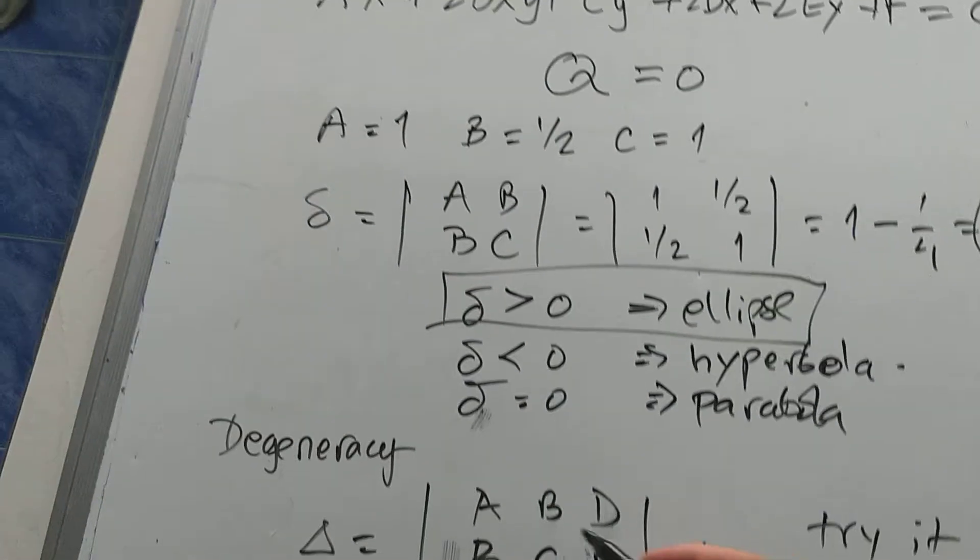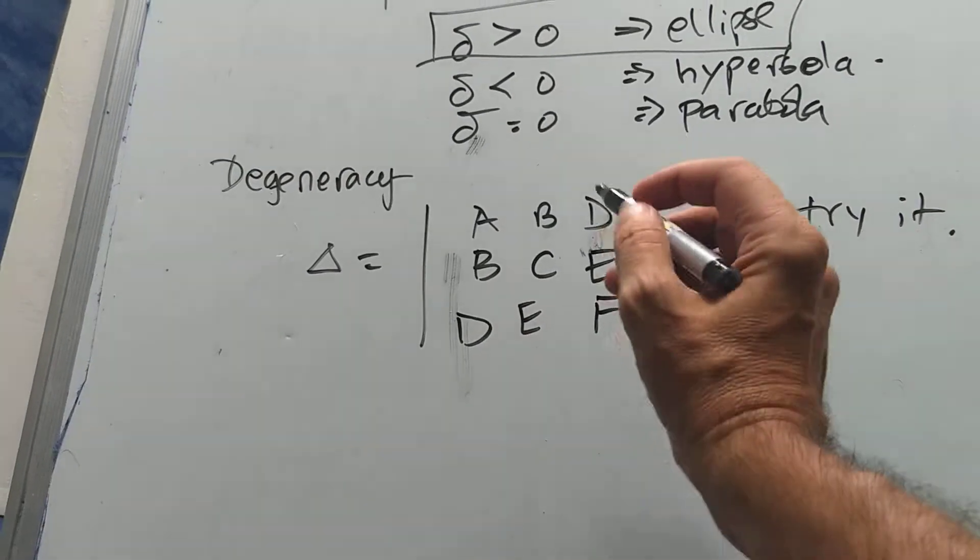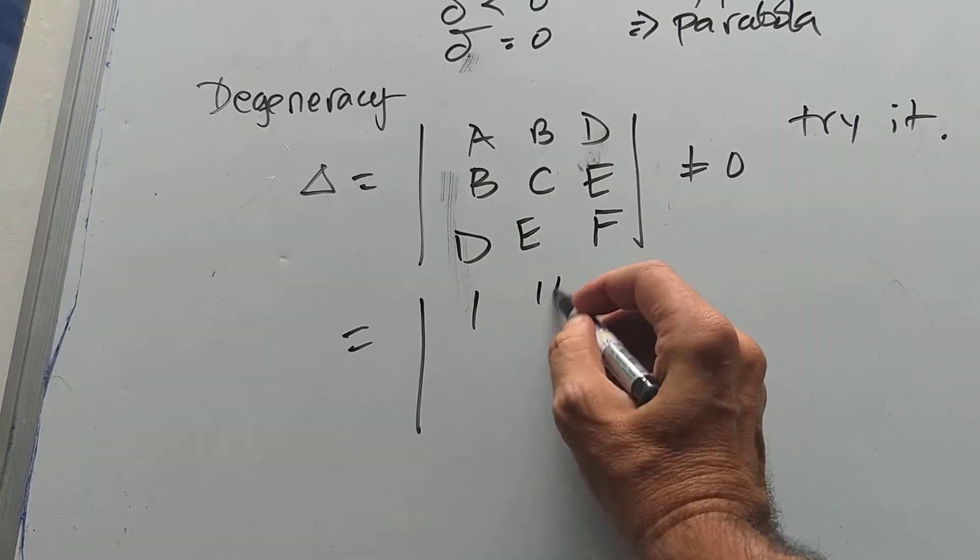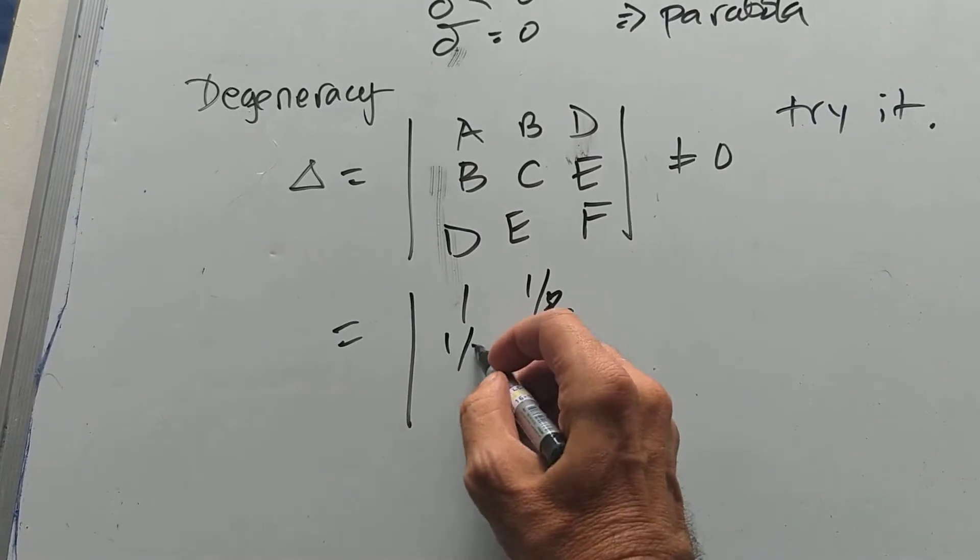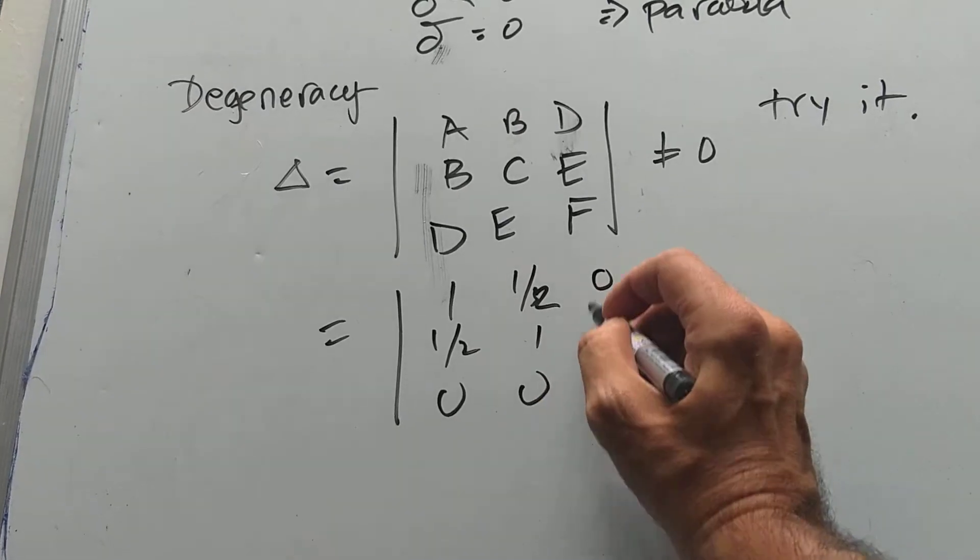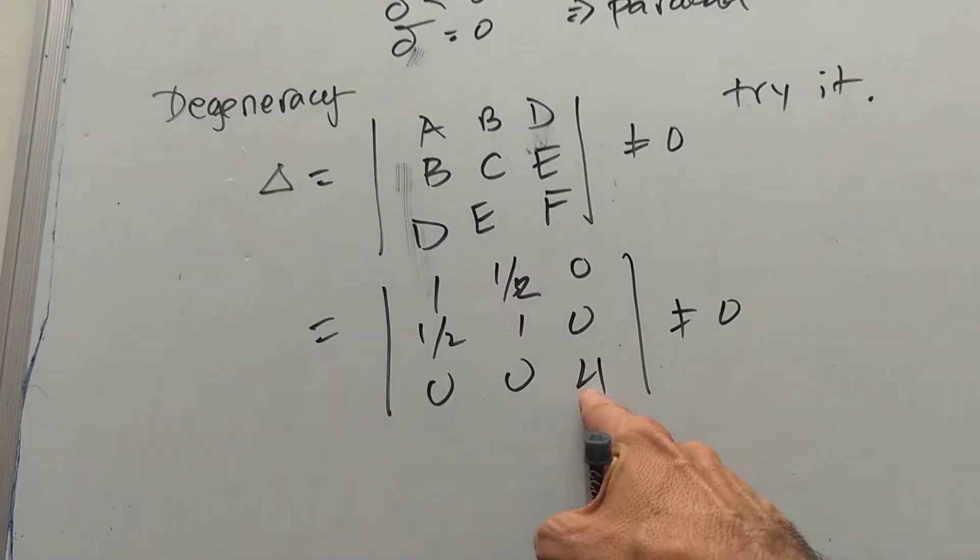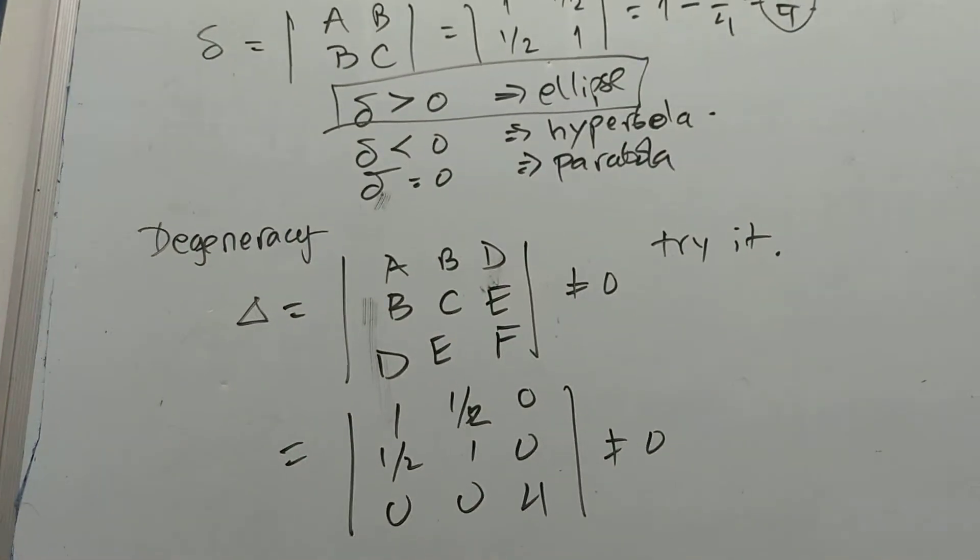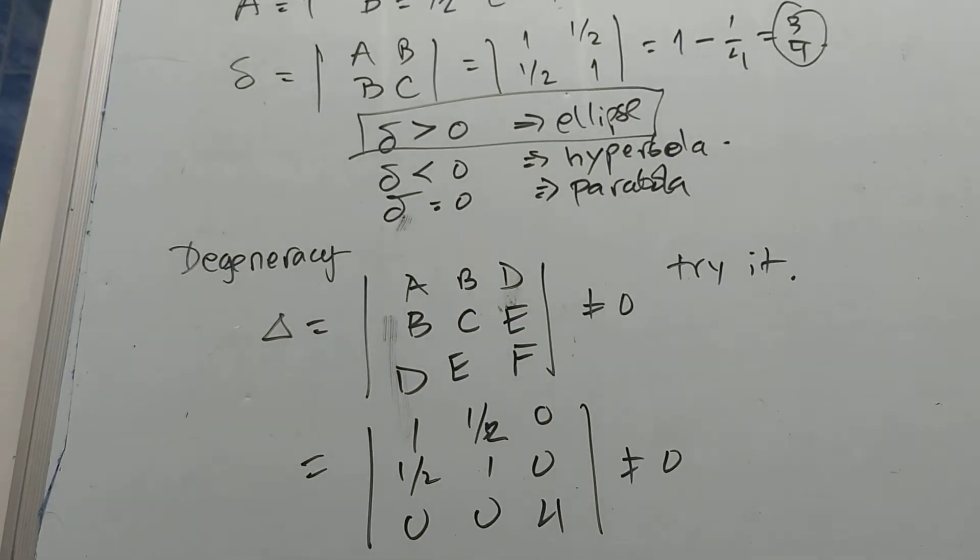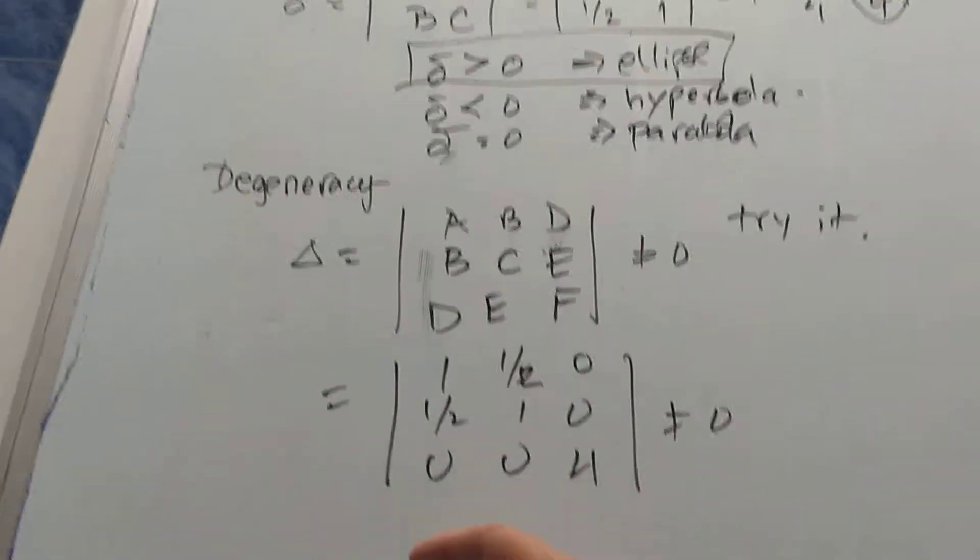Okay, so a lot of these terms are 0. Well, okay, we can just do that. |1, 1/2, 0; 1/2, 1, 0; 0, 0, 4|. This is not going to be 0 because the product of the diagonal is not 0. So the determinant is not going to be 0. Get it? So it's not degenerate.